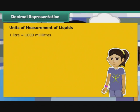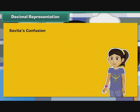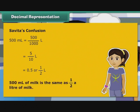1 litre is equal to 1000 millilitres. Therefore, 1 ml is equal to 1 by 1000 litre, that is equal to 0.001 litre. 1 kilolitre is equal to 1000 litres. Therefore, 1 litre is equal to 1 by 1000 kilolitre, that is equal to 0.001 kilolitre. Now, we revisit Savita's confusion. 500 ml is equal to 500 by 1000 litre, that is equal to 5 by 10 litre, that is equal to 0.5 or 1 by 2 litre. So 500 ml of milk is the same as half a litre of milk. Savita is now relieved.